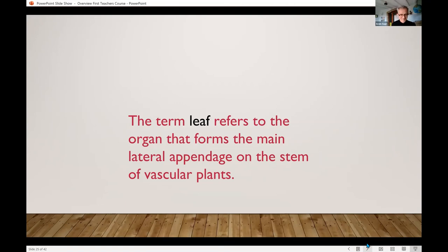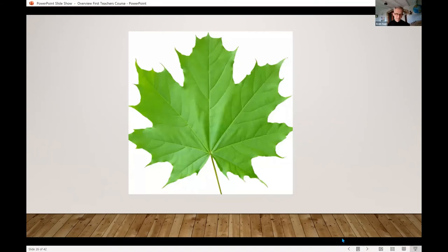In the same lecture we are being asked to not rely on definitions. You know when somebody gives a talk and picks up the Oxford Dictionary and says, you want me to talk about leaves? Well, this is what the Oxford Dictionary says. The term leaf refers to the organ that forms the main lateral appendage on the stem of vascular plants. Any questions? Well, quite, yes.